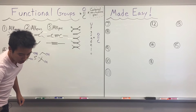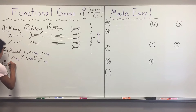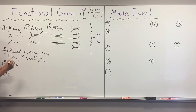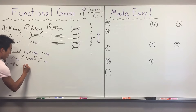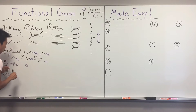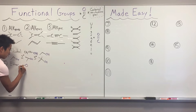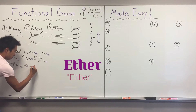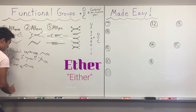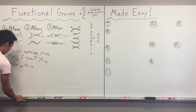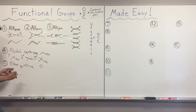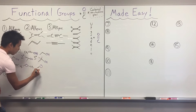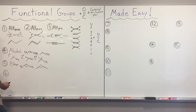Next is our good old friend ethers. Ethers are really easy to remember because the key is right in the name — an ether is an oxygen with carbons on either sides. In bond line form, it's an oxygen once again with carbons on either side. That's an ether.